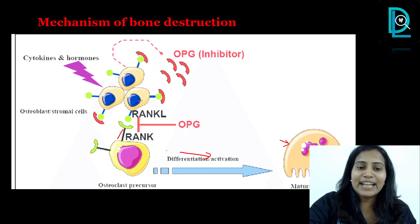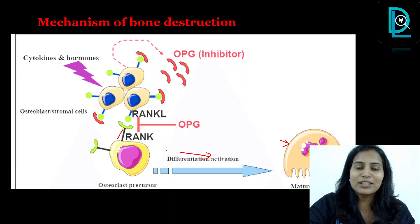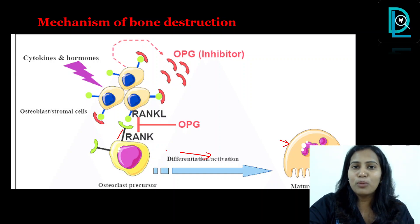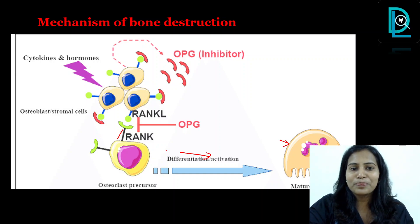Now where is RANK-L expressed? It is expressed on the surface of your osteoblasts, bone marrow stromal cells, fibroblasts, and similar cells.